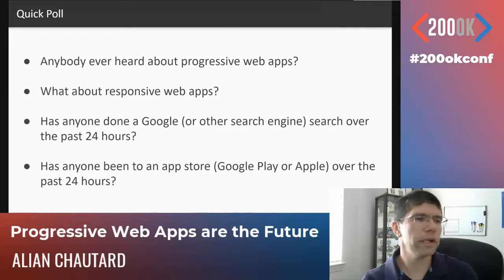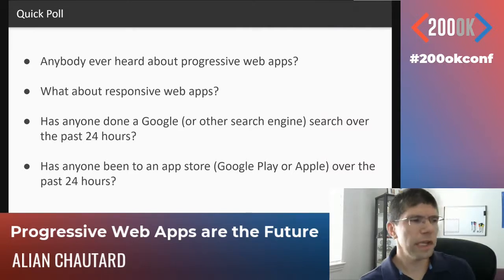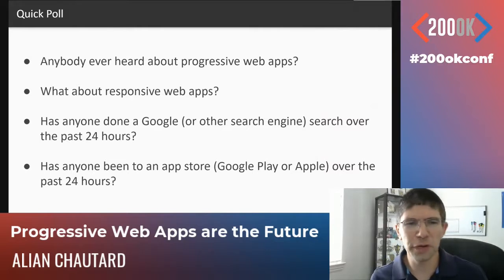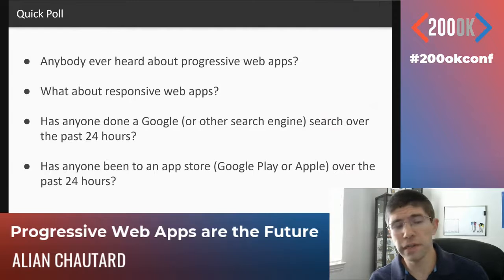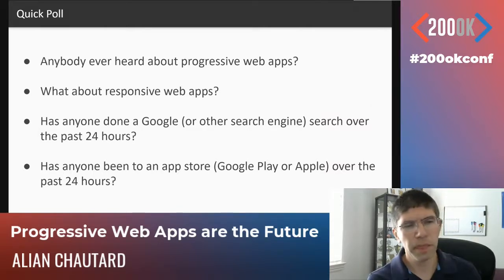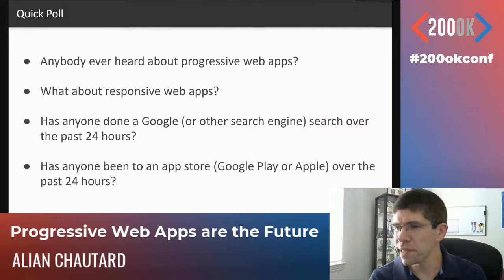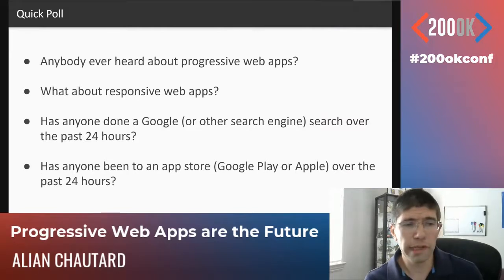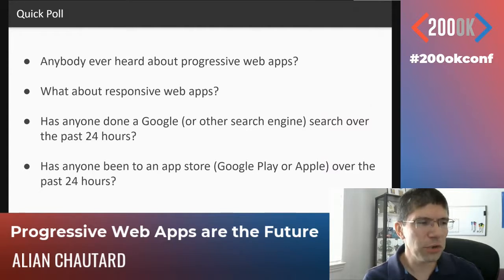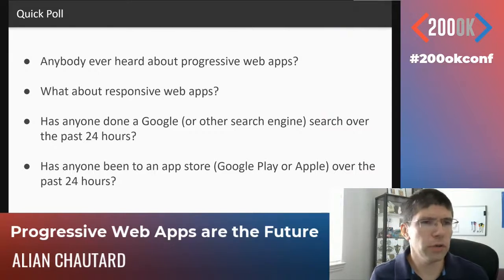My next question is: has anyone done a Google or other search engine search over the past 24 hours? That's a silly question because usually everyone in the room raises their hand — we all use search engines every day. But the next question is slightly different: has anyone been to an app store — Google Play or the Apple Store — over the past 24 hours? I'm guessing less people would answer yes. Usually it's about 10% of the audience, and I find that surprisingly high because I'd go to an app store maybe once or twice a month. These two things are very important in introducing progressive web apps.